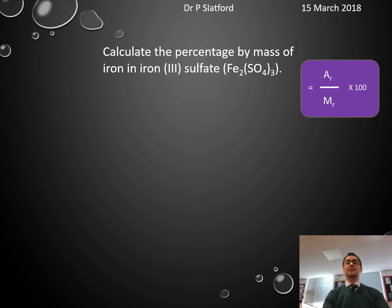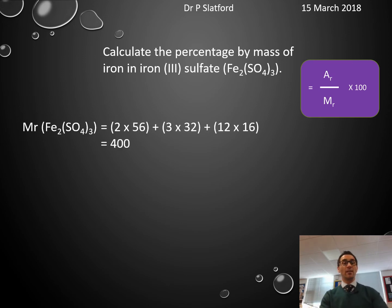Calculate the percentage by mass of iron in iron(III) sulfate (Fe2(SO4)3). The Mr of iron(III) sulfate is 2 times 56 plus 3 times 32 plus 12 times 16, which equals 400. Iron accounts for 112 out of that 400, so it comes out as 28%.